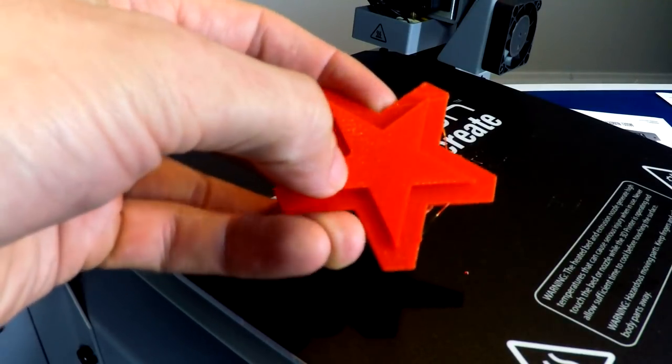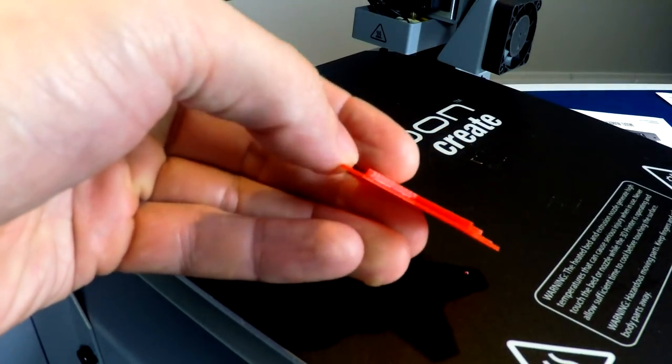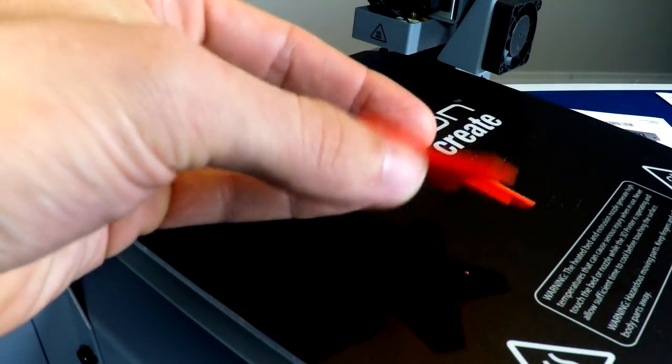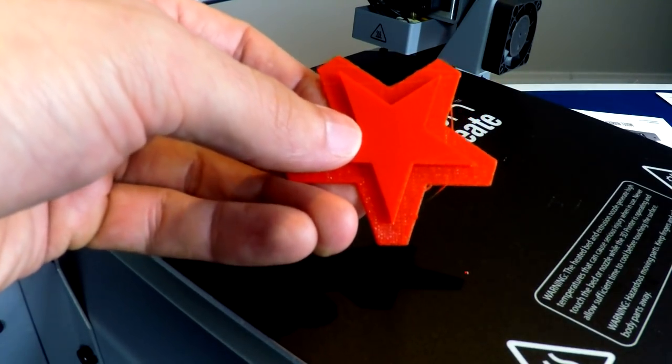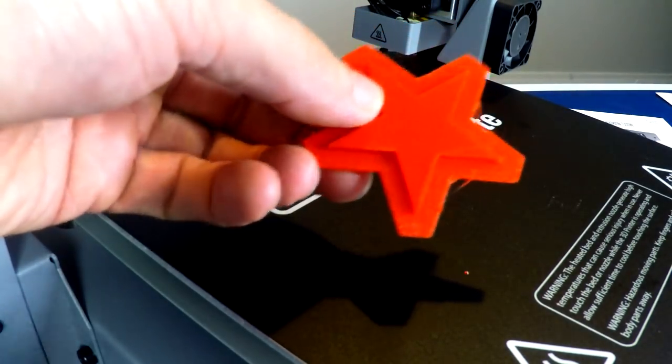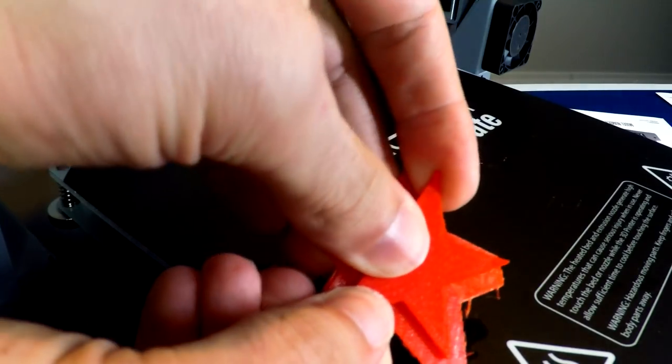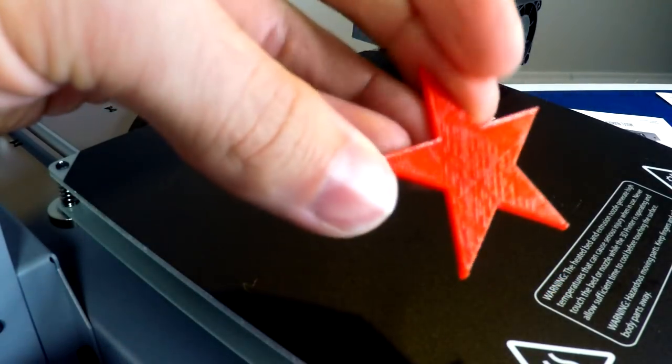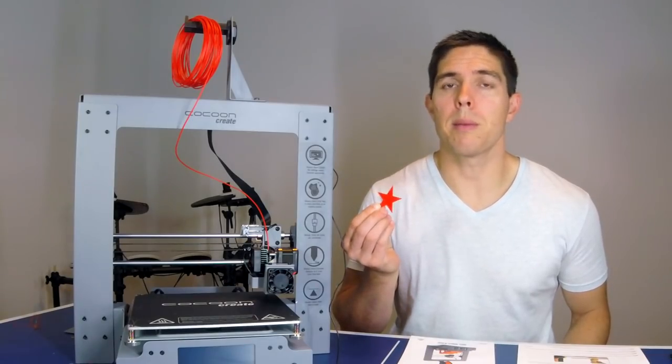So we've got our finished star. Surface quality is excellent, much better than my old Solidoodle. It's not tall enough to see the side layer height but this is a really encouraging result. I believe this might be a raft on the bottom although since I didn't process the file and create the gcode myself I just have to assume that. Let's see if we can peel it off to test. So that's a fantastic first print. I'm really impressed with that.